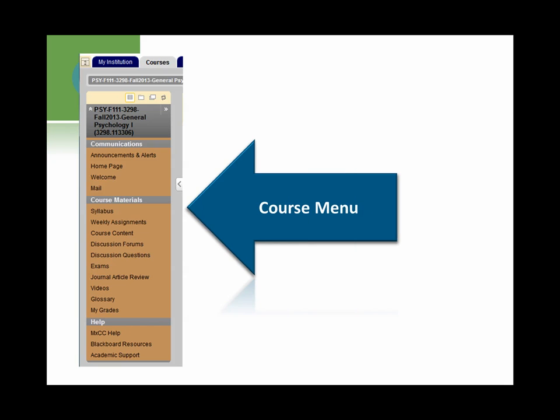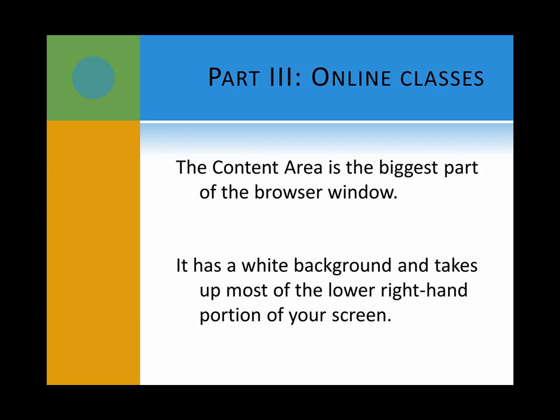Click on a link in the course menu and you will see the specific content or tool area. The content area is the biggest part of the browser window. It has a white background and takes up most of the lower right-hand portion of your screen.